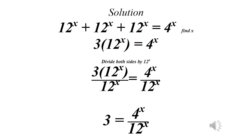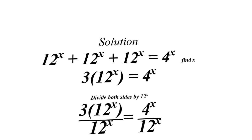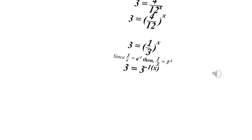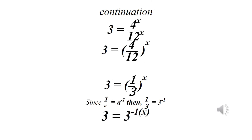We cancel 12 raised to power x on the left side, so we have 3 equals 4 raised to power x divided by 12 raised to power x. Since x is a common power, we bring it out: 3 equals (4 over 12) raised to power x. We reduce 4 over 12 to 1 over 3.